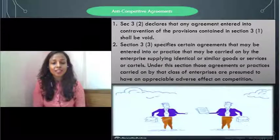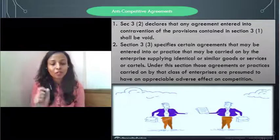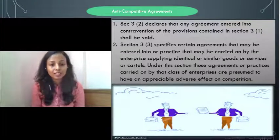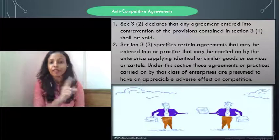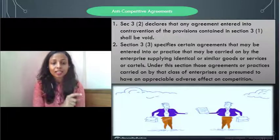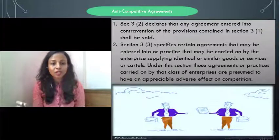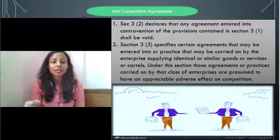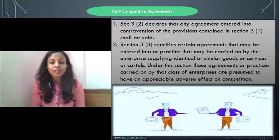Section 3(2) talks about void agreements. It says that whatever agreements are defined under Section 3(1) — covering supply of goods and manufacturing of goods — are to be declared void by the Competition Commission of India.